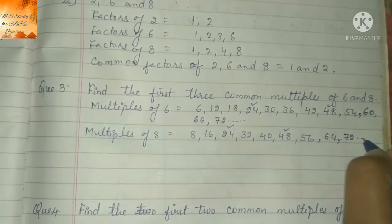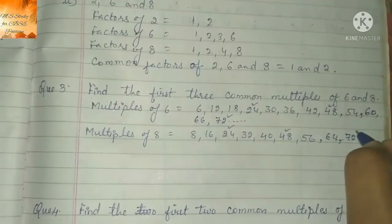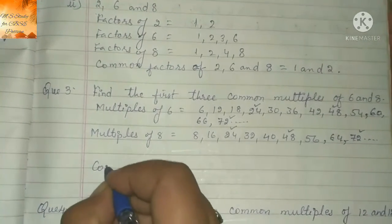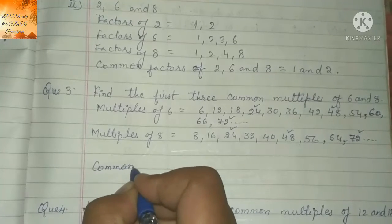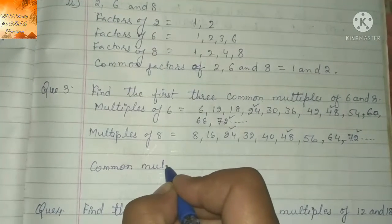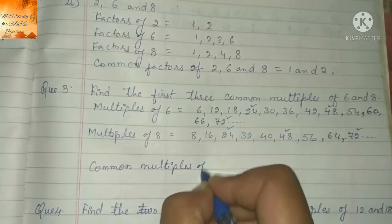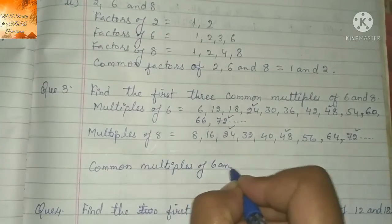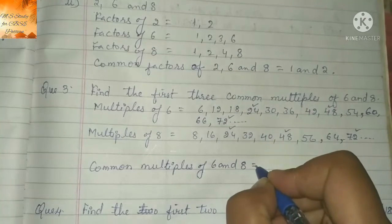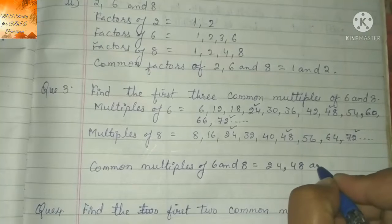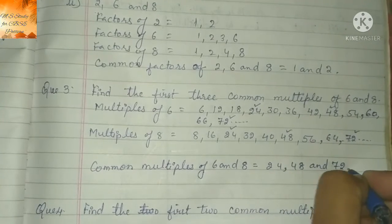The first three common multiples of 6 and 8 equals 24, 48 and 72.